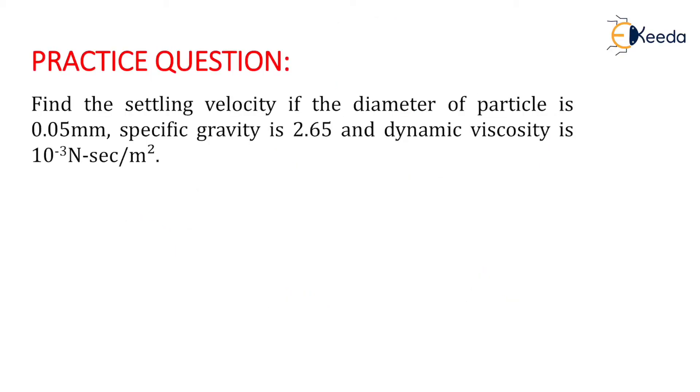The question is: find the settling velocity Vs if the diameter of particle is 0.05 mm, specific gravity is 2.65, and dynamic viscosity is 10^-3 newton-second per meter square.